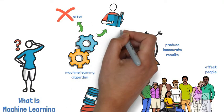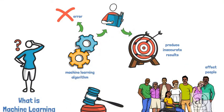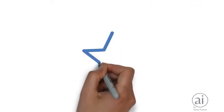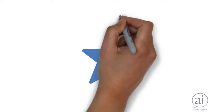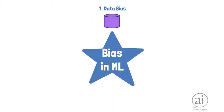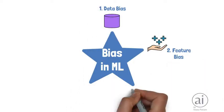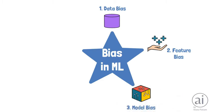The most common sources of bias in a machine learning system are data bias, feature bias, model bias, algorithm bias, and operational bias.